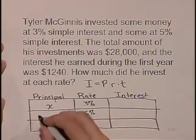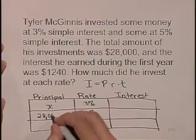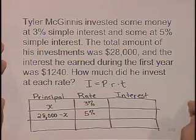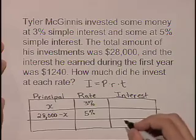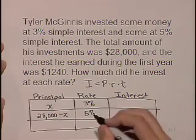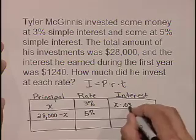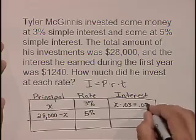we have $28,000 minus X as the amount of money that's at 5%. To find the interest on the money at 3%, we take the principal times the rate, X times 0.03, or 0.03X.